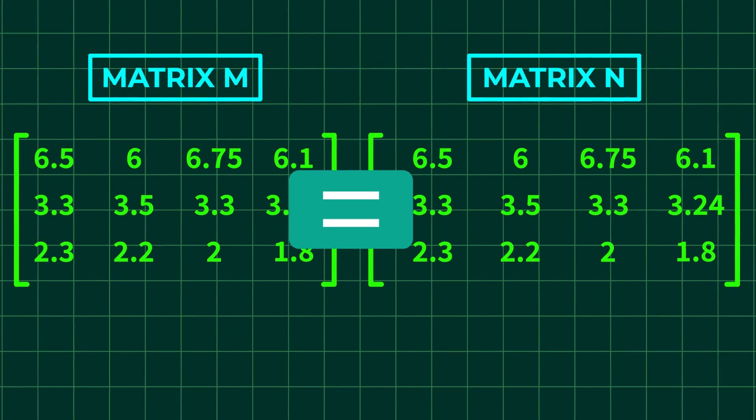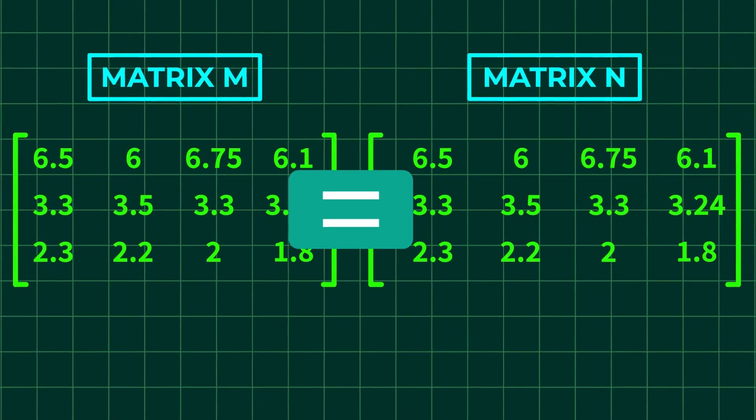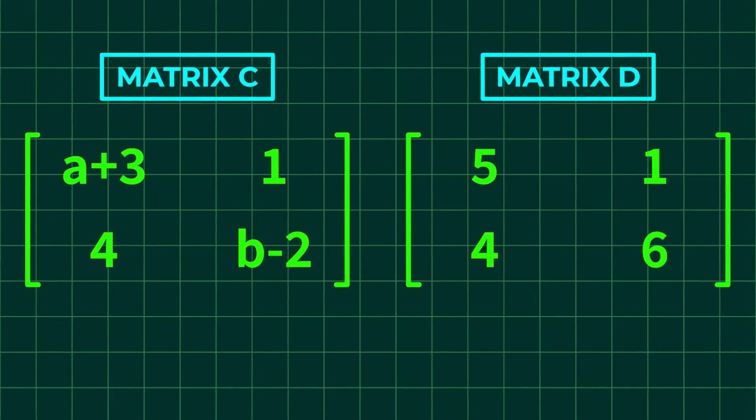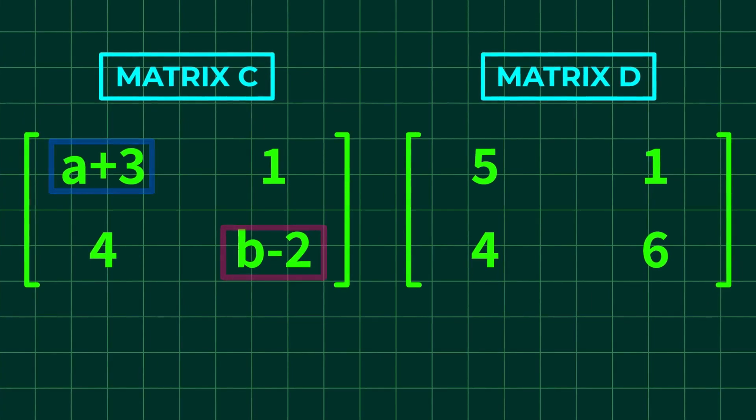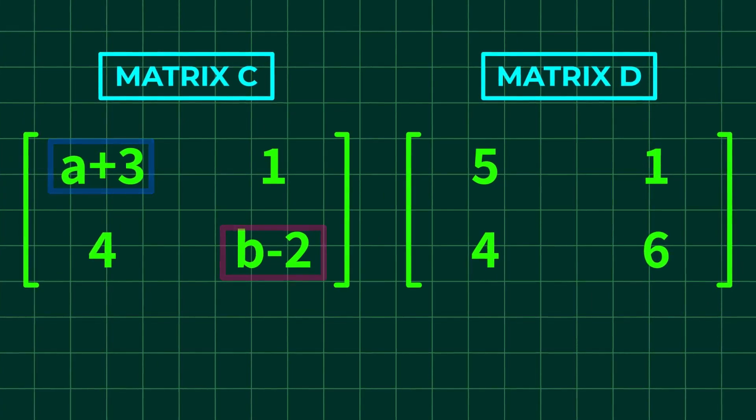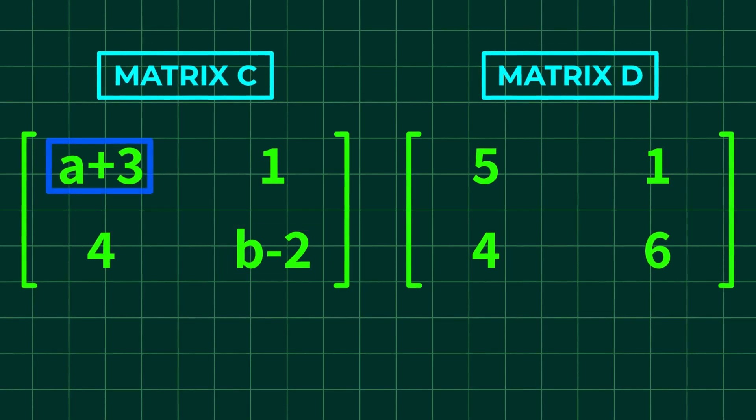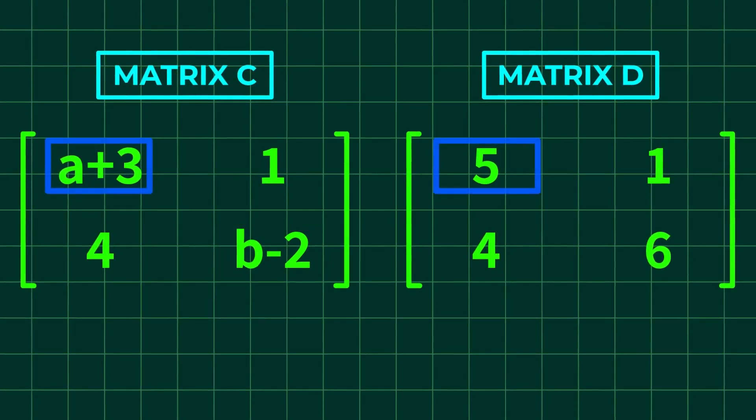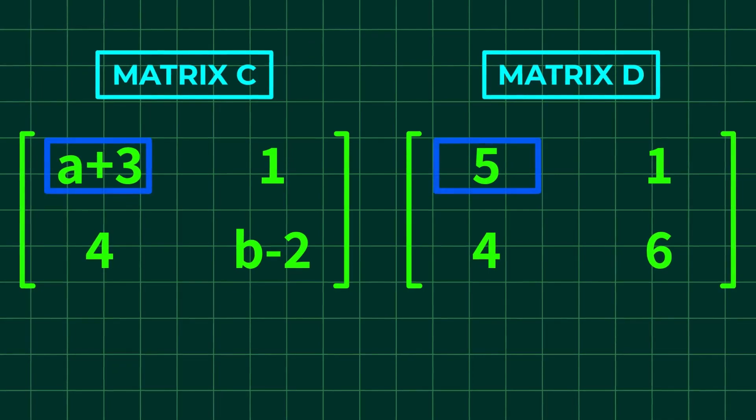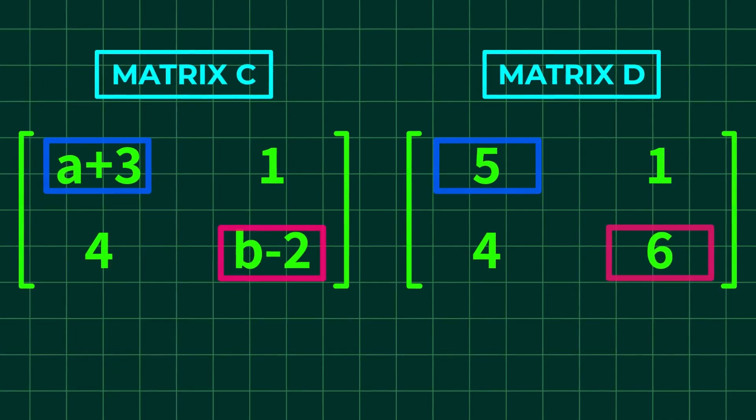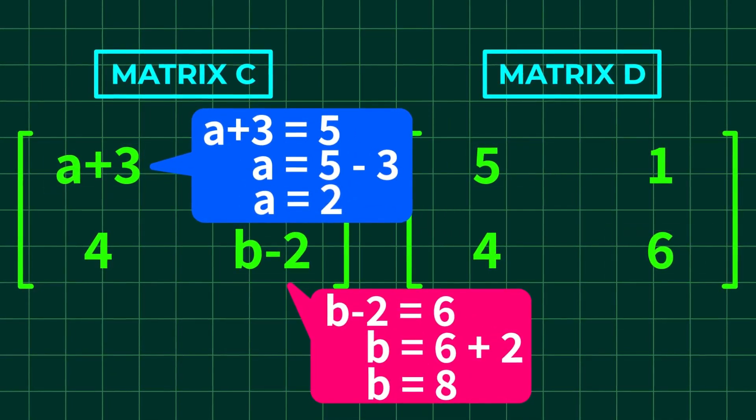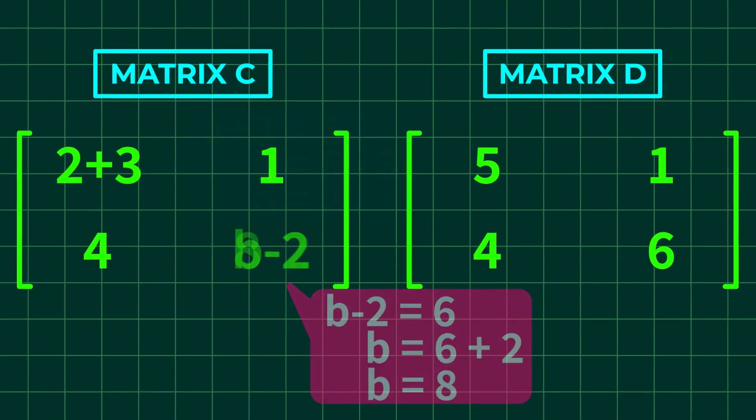We can find the unknown variable of an element based on the matrix equality. If the following matrices C and D are equal, we can obtain the value of A and B in the matrix C by putting them as linear equations. So, A plus 3 in matrix C equals 5 in matrix D, or A plus 3 equals 5, and likewise B minus 2 equals 6. In a matter of seconds, we can tell that the value of A is 2 and B is 8.